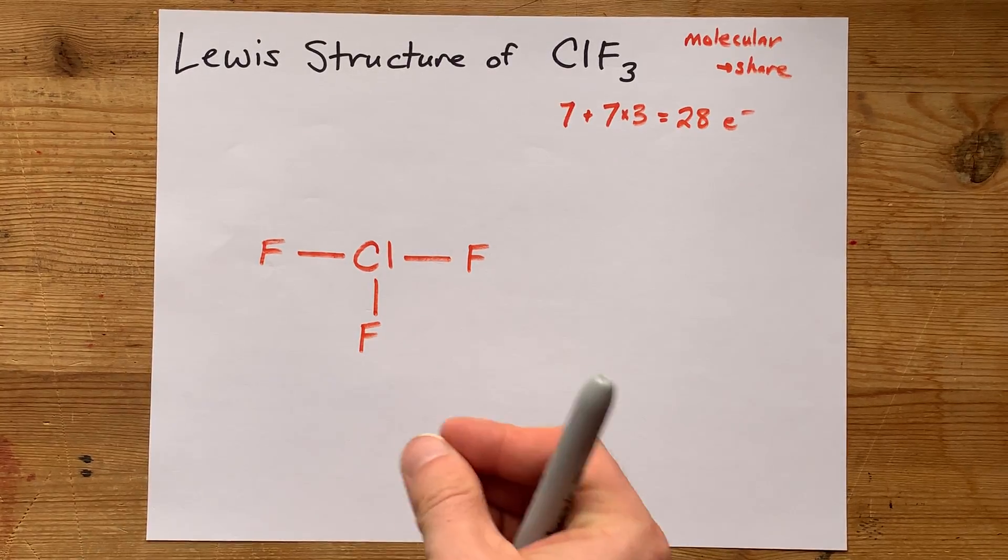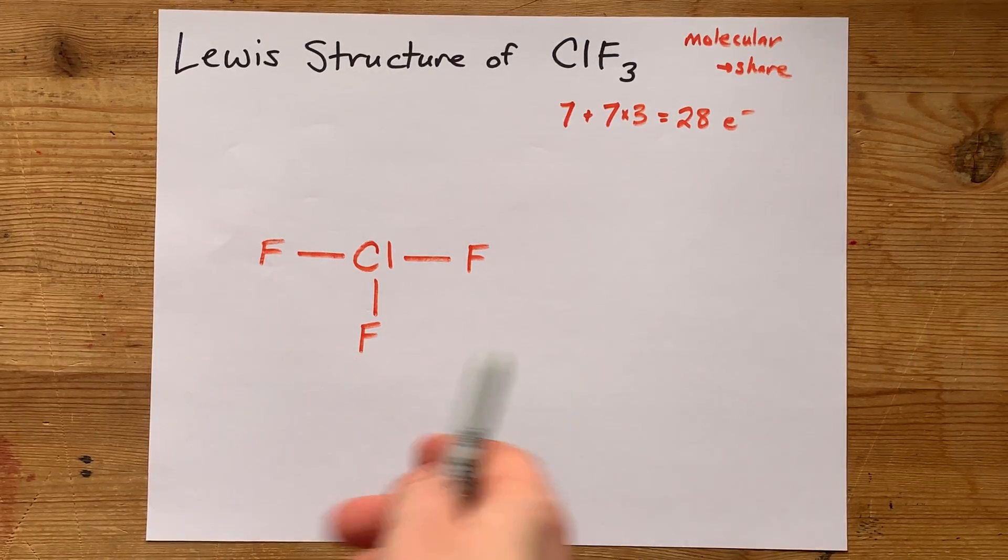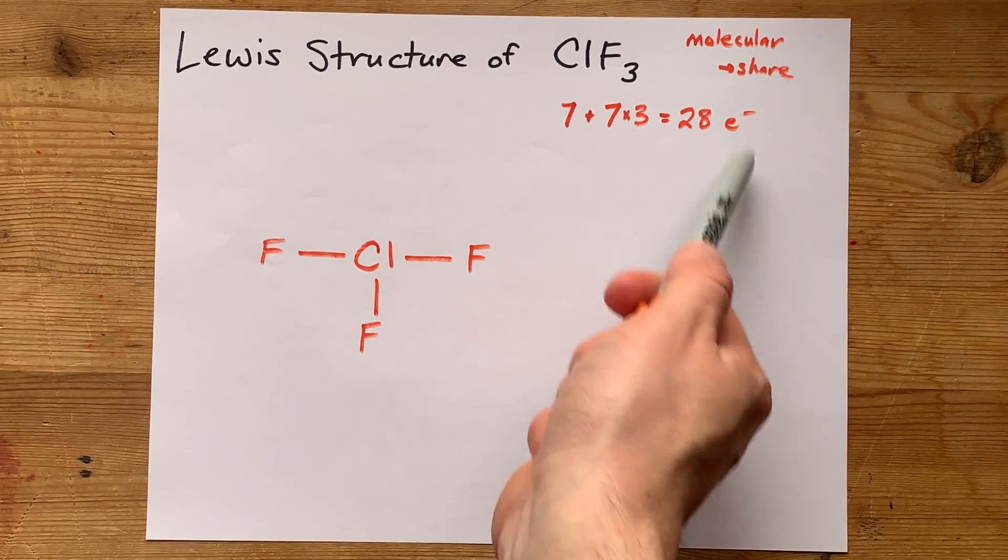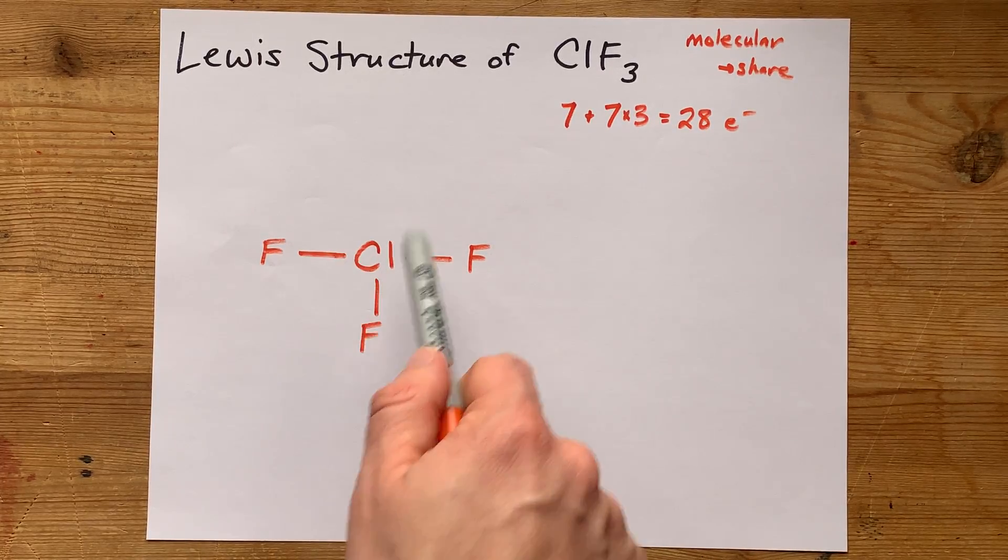Now I'm going to complete the octet on all of the outer atoms first, and I'm going to make sure that I don't go over 28 electrons, because I'm only allowed to use 28 total. Again, we already have 2, 4, 6.